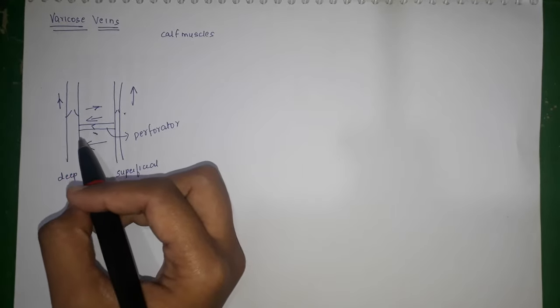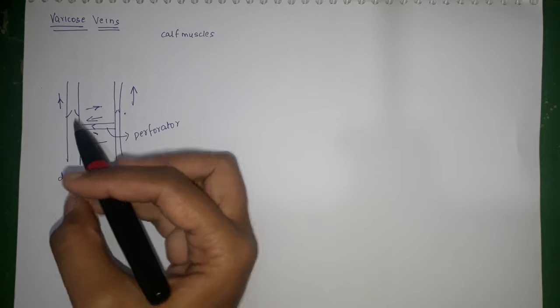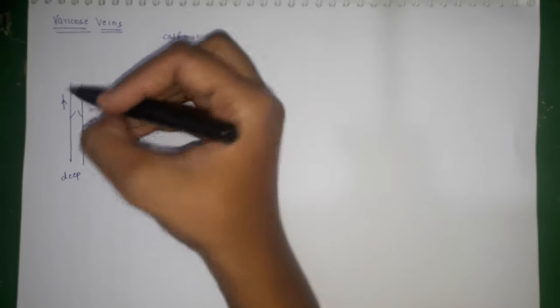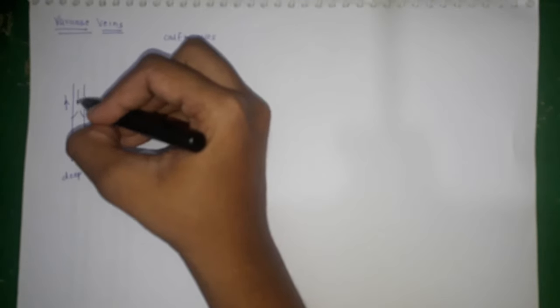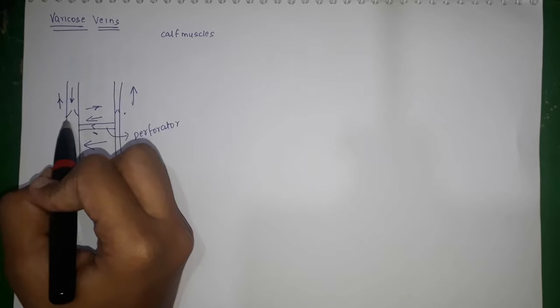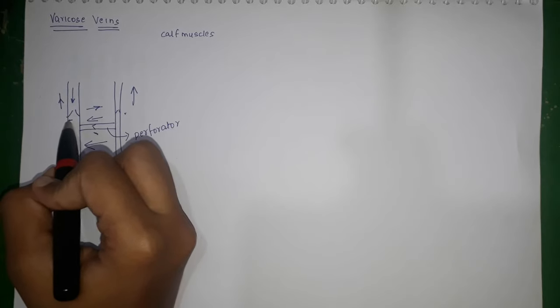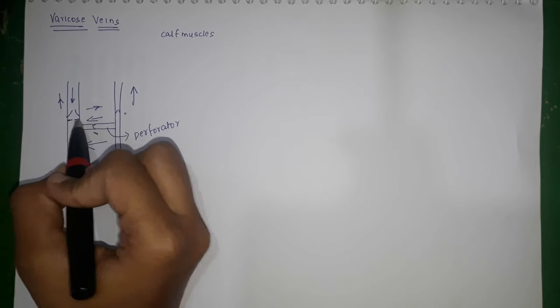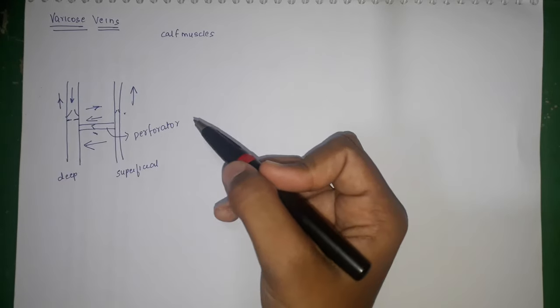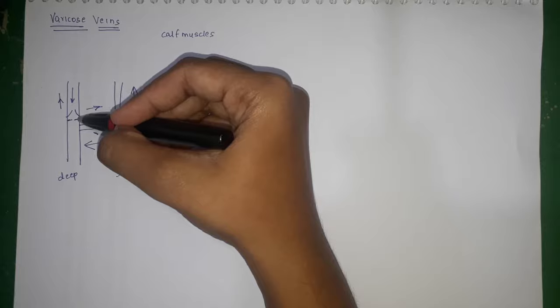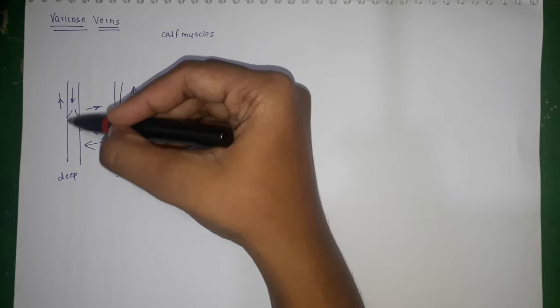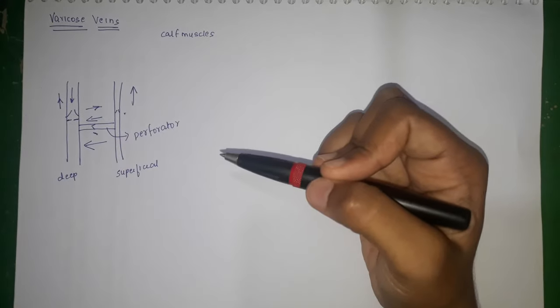When the muscle contraction stops, the flow should occur in the reverse direction, but the valves present in the perforators, deep system, and superficial system close off. Once they close off, the flow of blood does not occur in the reverse direction. This is what happens in a normal venous system in the lower limb.